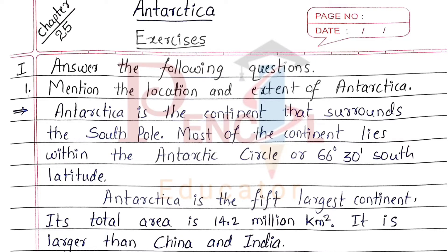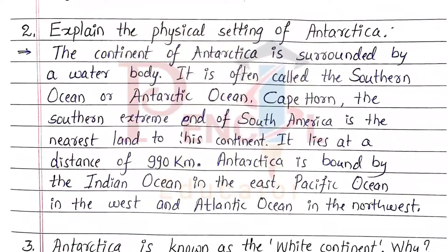Mention the location and extent of Antarctica. Antarctica is the continent that surrounds the South Pole. Most of the continent lies within the Antarctic Circle, or 66.30 south latitude. Antarctica is the 5th largest continent. Its total area is 14.2 million square kilometers. It is larger than China and India.